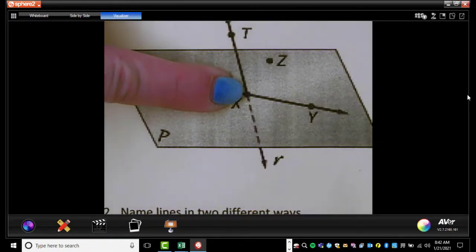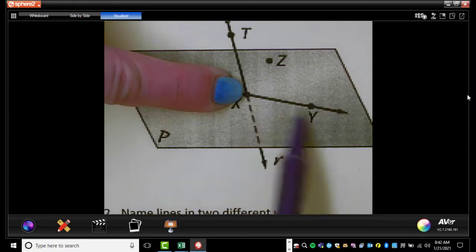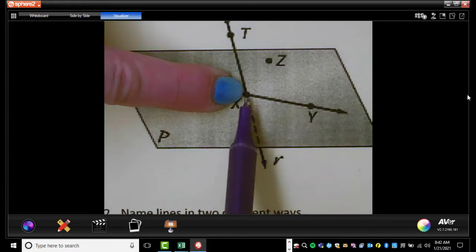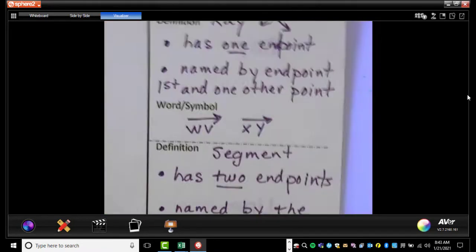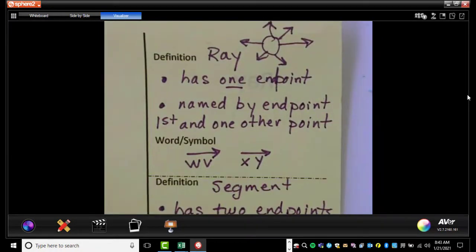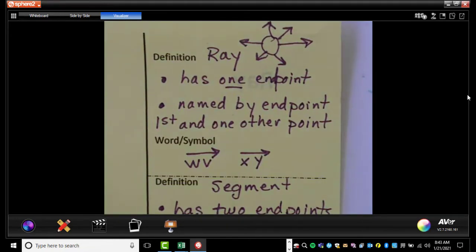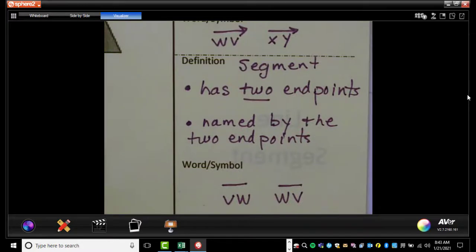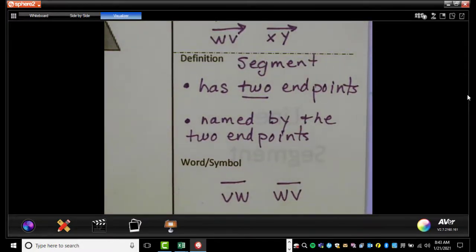So ray XY. So I'm kind of covering up that other part of the line. So we're just talking about this part of the line. X, Y. So ray XY.